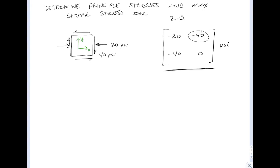I'll set up the equation solution. So σ_xx, our initial normal stress, is minus 20. σ_yy is equal to 0. And σ_xy is equal to minus 40.